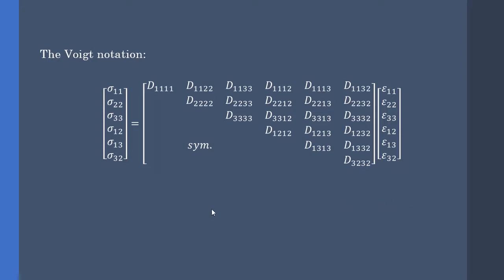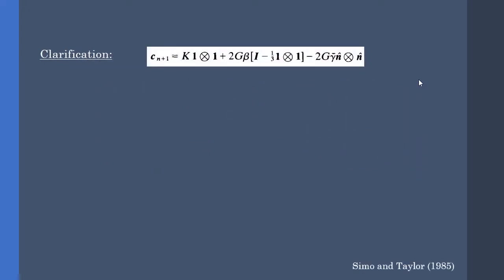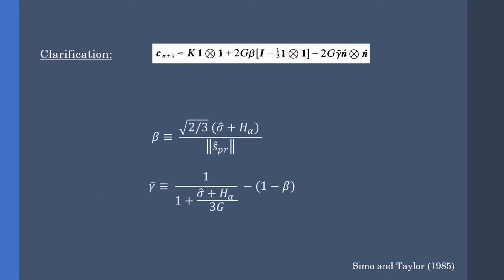Continuing with some clarification: first we have the bulk and shear moduli, next the tensor product of the second-order identity matrices, and finally the flow tensor.